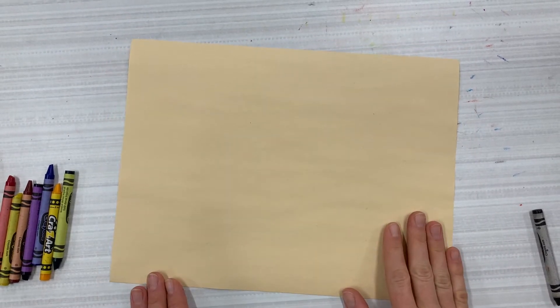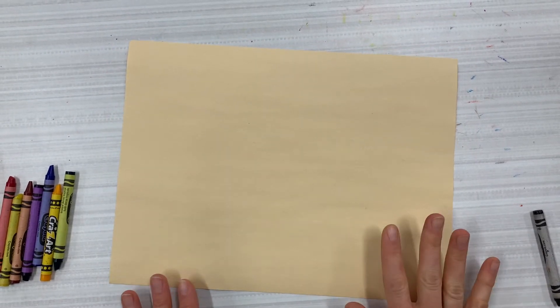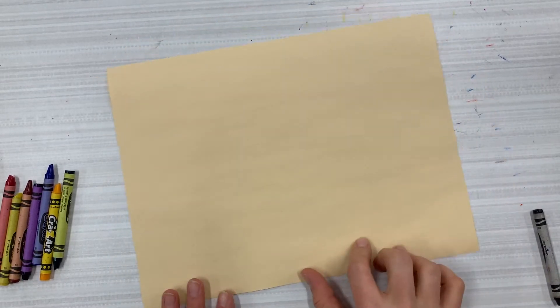So the first thing we want to do is make sure our paper is turned horizontal, which is side to side, so not up and down, side to side like this.